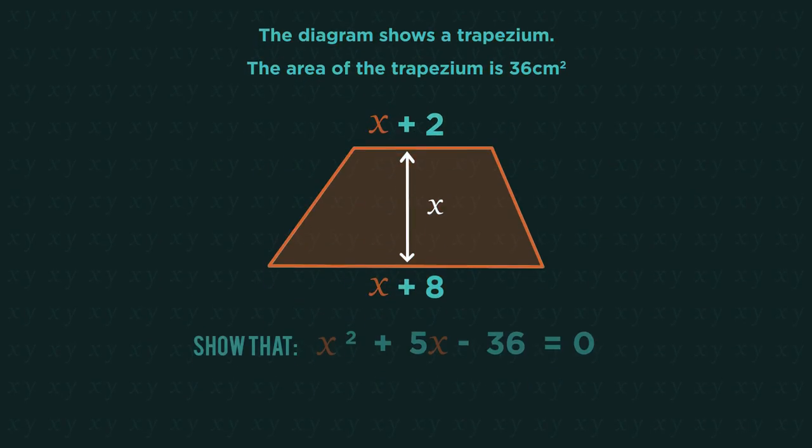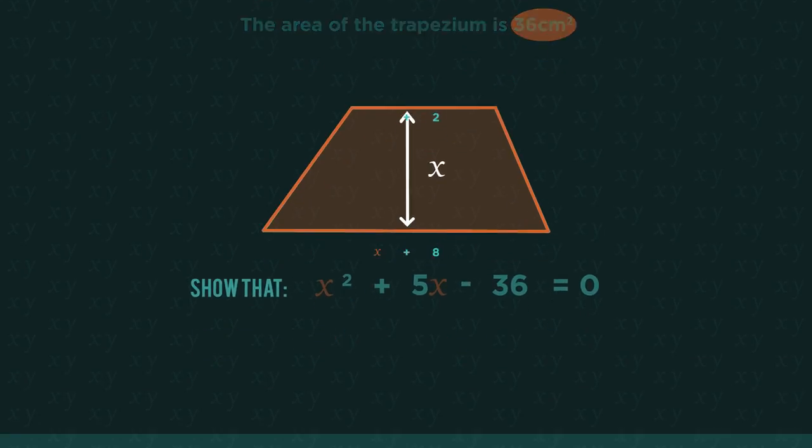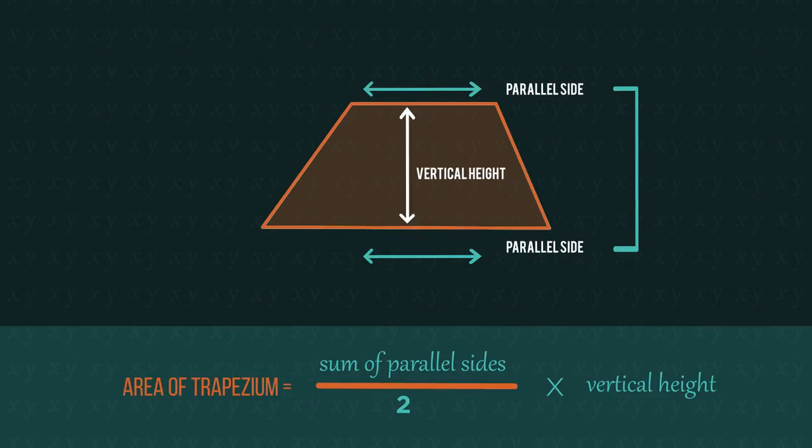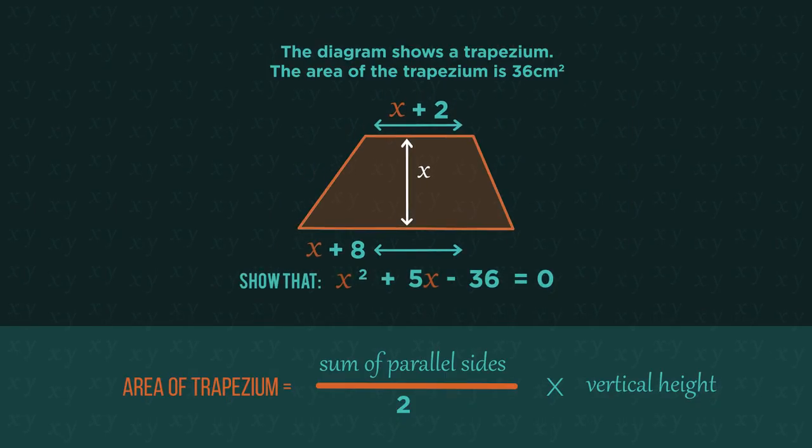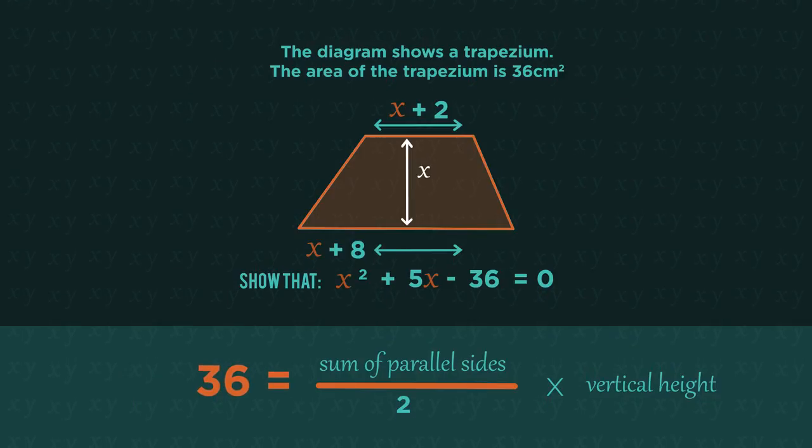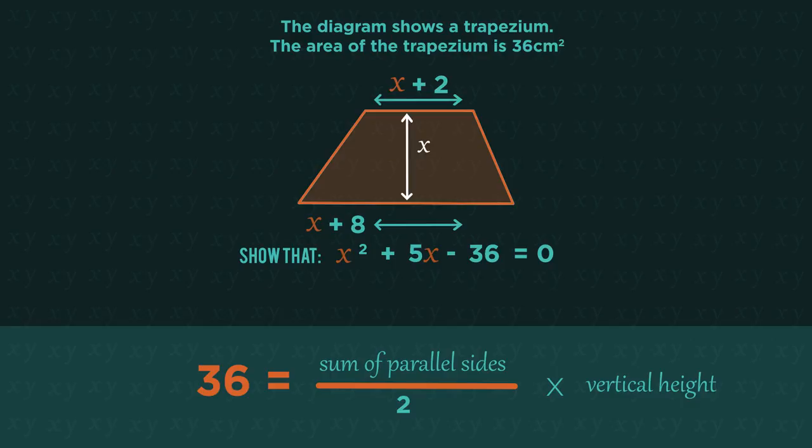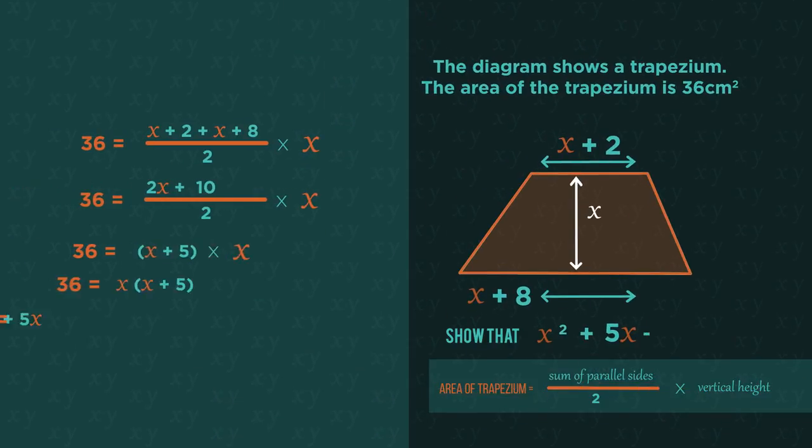So the area equals 36. Do you remember that the area of a trapezium is half the sum of the parallel sides times the distance between them? Use the information in the diagram to write an expression in terms of x for the area of the trapezium and make it equal to 36. Pause the video and see how you get on. Did you end up with the correct equation?